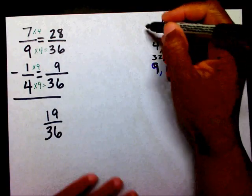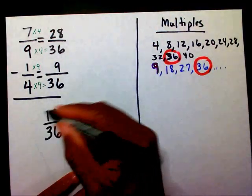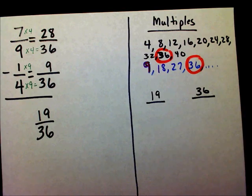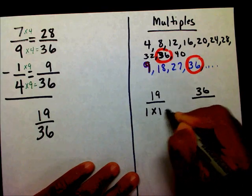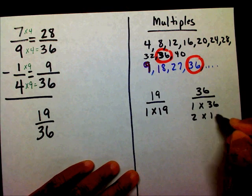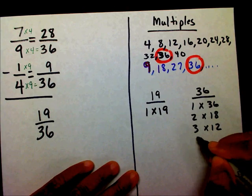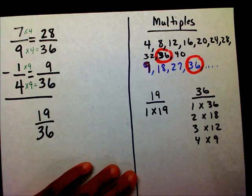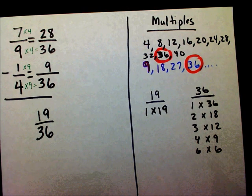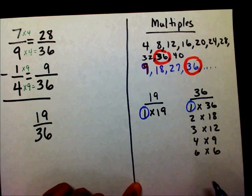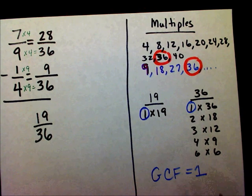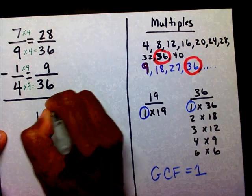Nineteen thirty-sixths. I need to know if this is in its lowest terms. The factors for nineteen are one and nineteen. For thirty-six, you have one and thirty-six, two and eighteen, three and twelve, four and nine, and six and six. They share only one in common — there's no nineteen in the factors of thirty-six. So my greatest common factor is one, and therefore this is in lowest terms.